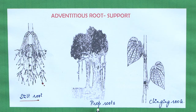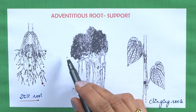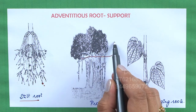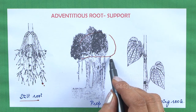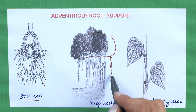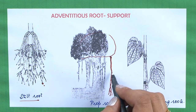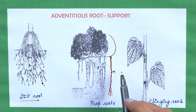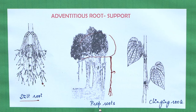Next are prop roots, seen in Ficus bengalensis, otherwise called banyan. The plant body spreads into a thick canopy, and numerous adventitious roots develop from the branches. They droop down, firmly fix to the soil, and provide mechanical support like pillars. Such roots are called prop roots.